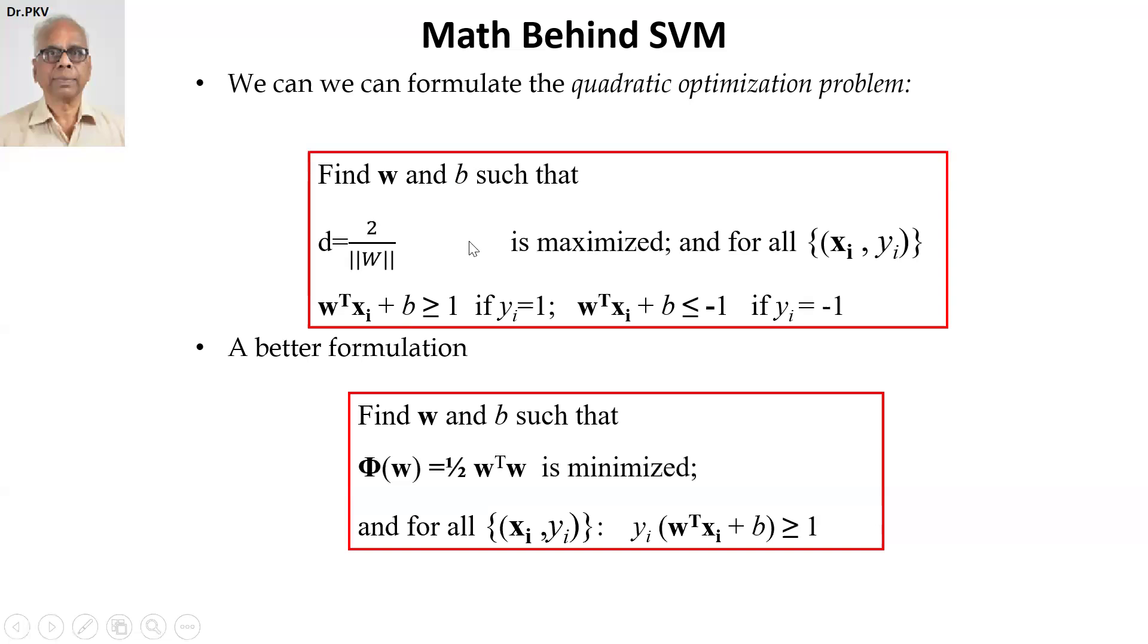In other words, I can put these two sets of constraints into a single constraint. Yi could be plus one or minus one, but when I multiply, can I satisfy a set of constraints where Yi into W transpose Xi plus B greater than or equal to one.